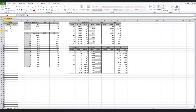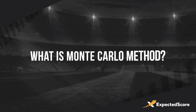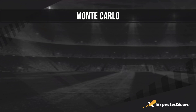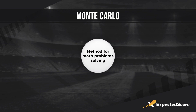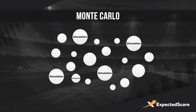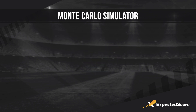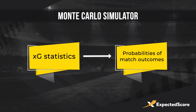We will review the example of the Monte Carlo simulator developed by the owners of the Expected Score project. First, let's clarify what the Monte Carlo method is. Monte Carlo is a method for solving math problems based on modeling of multiple probability simulations. In football, the Monte Carlo simulator is a tool that converts XG into probabilities of match outcomes.